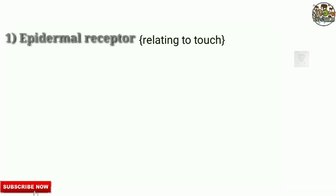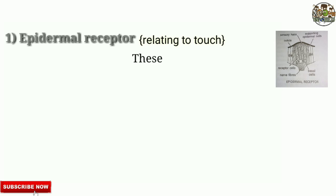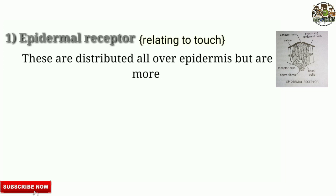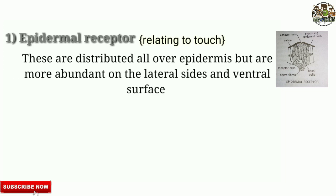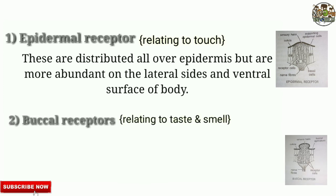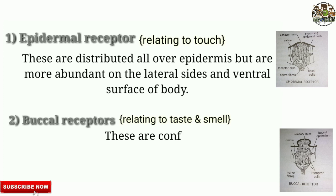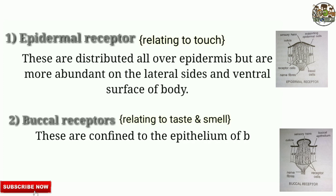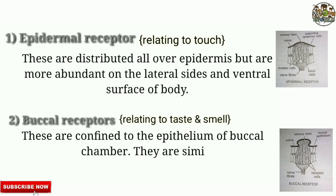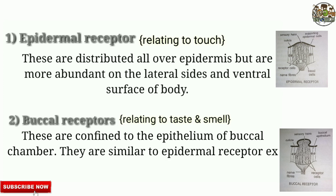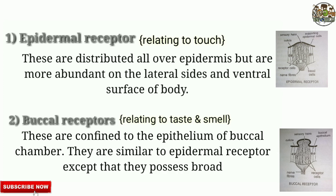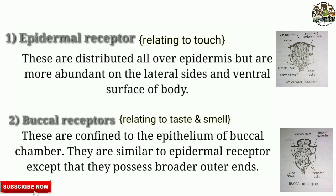Epidermal receptors are distributed all over the epidermis but are more abundant on the lateral side and ventral surface of the body. Buccal receptors are confined to the epithelium of the buccal chamber. They are similar to epidermal receptors except that they possess broader outer ends.